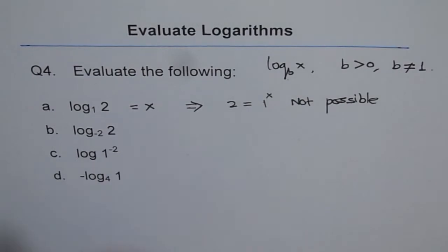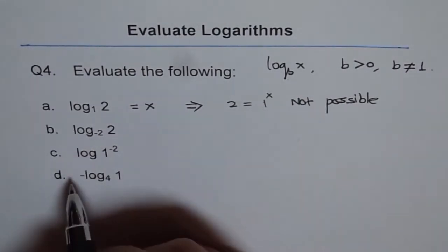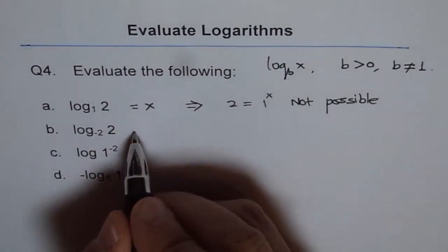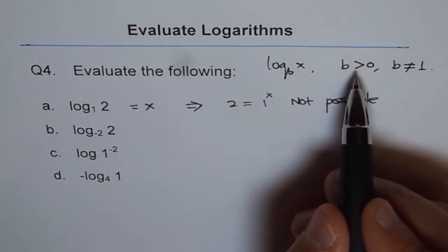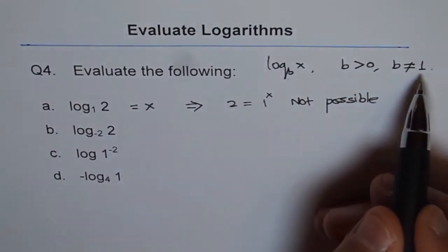Now, the next one, log to the base of -2 of 2. Now, this again is not possible since base should be greater than 0 and not equal to 1.